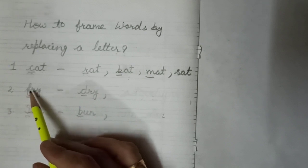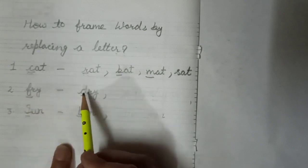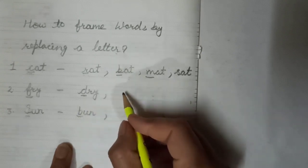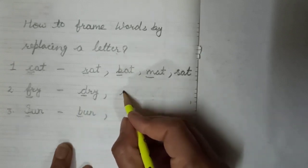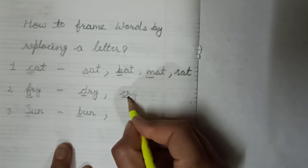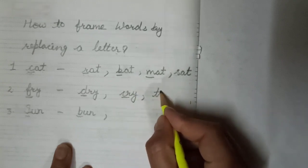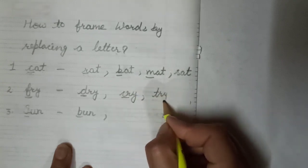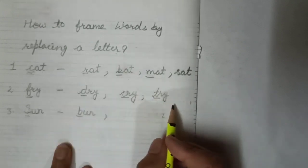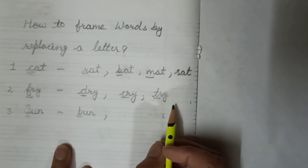One word is fry — F, R, Y. When I replace F with D it will be dry. When I replace F with C it will be cry. When I replace F with T it will be try. By replacing letters with different ones, we get different words.